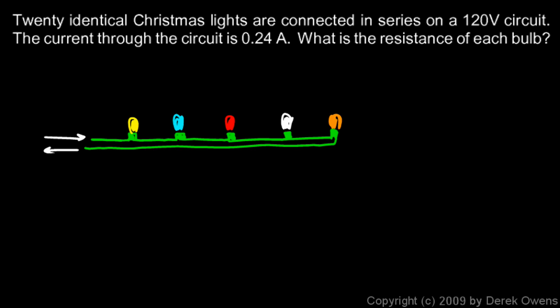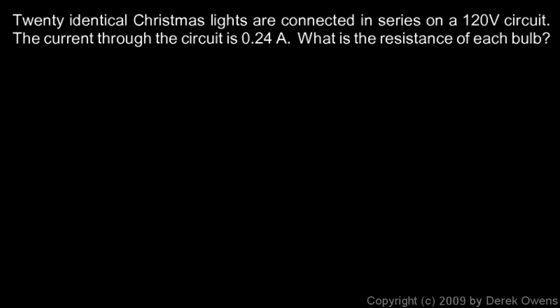But eventually someone had the realization that connecting them in parallel would solve that problem, and a lot of times you find these done in parallel now. When one light burns out the other ones continue working because each one is on its own separate branch of the circuit. But in this problem they're connected in series on a 120 volt circuit.